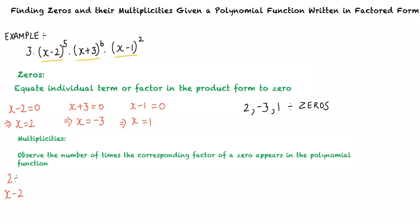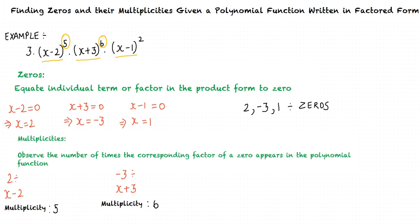Let us consider the first root, which is 2. The corresponding factor of 2 is x minus 2. Since we have x minus 2 raised to the 5th power, the multiplicity of 2 is 5. The next root is negative 3. The corresponding factor of negative 3 is x plus 3. Since x plus 3 is raised to the power 6, the multiplicity of negative 3 is 6. Finally, the corresponding factor of 1 is x minus 1, and since we have x minus 1 quantity squared, the multiplicity of 1 is 2.